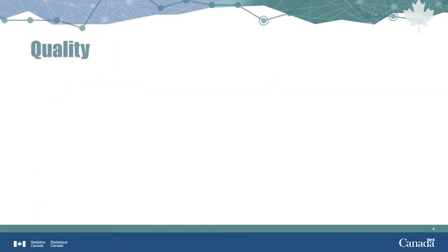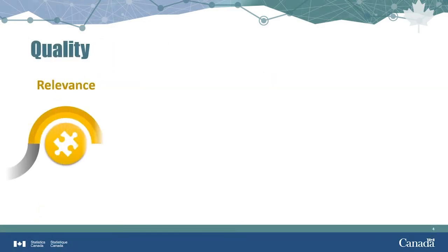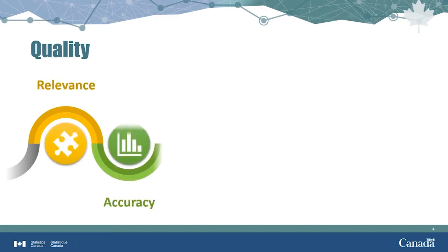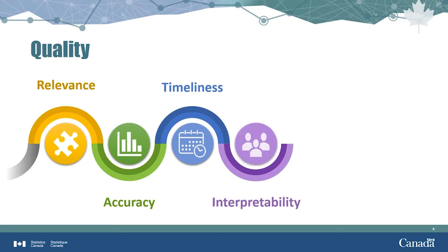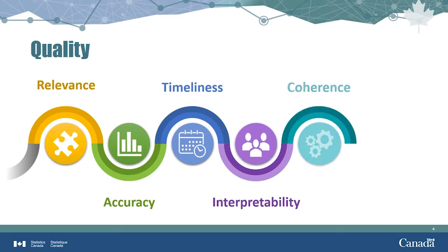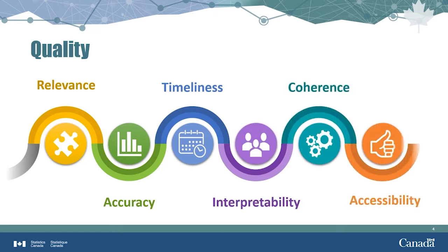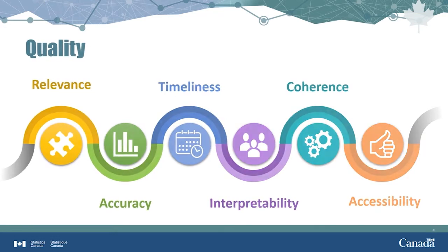The six dimensions of data quality are relevance, accuracy, timeliness, interpretability, coherence, and accessibility. Each dimension will be examined separately over the next few slides.